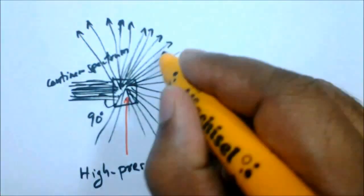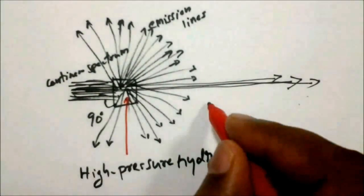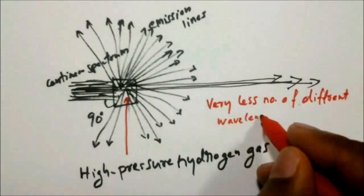This indicates that, as pressure increases, more different wavelength photons interact with the electrons in the hydrogen atoms and only photons which do not interact with the electrons pass straight through the hydrogen gas.